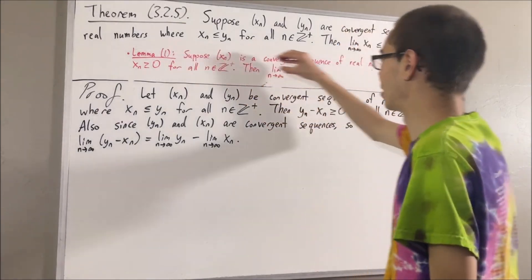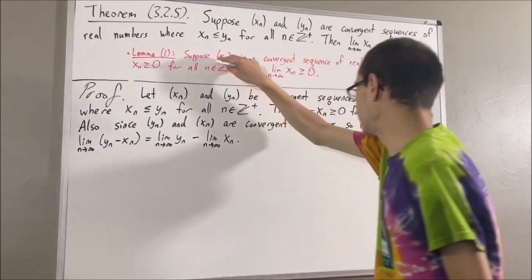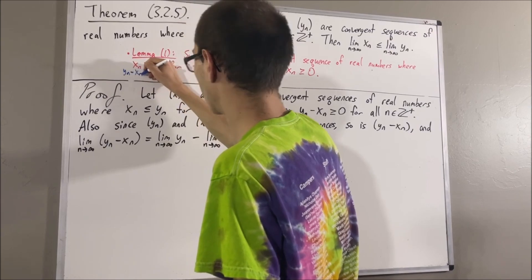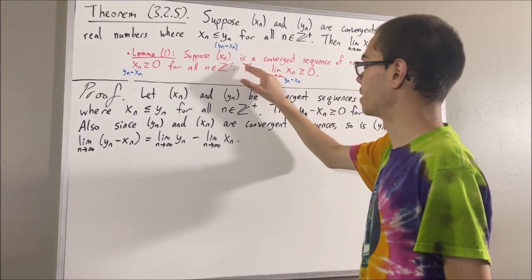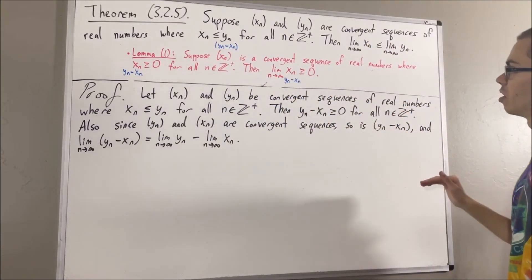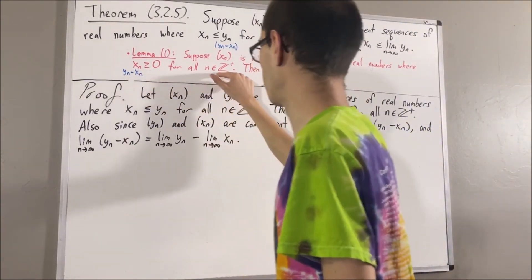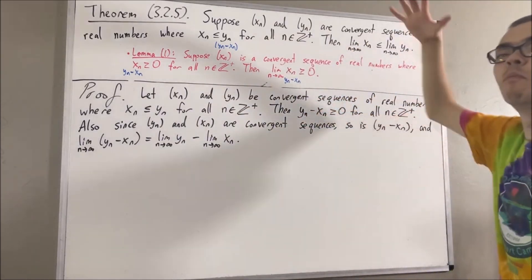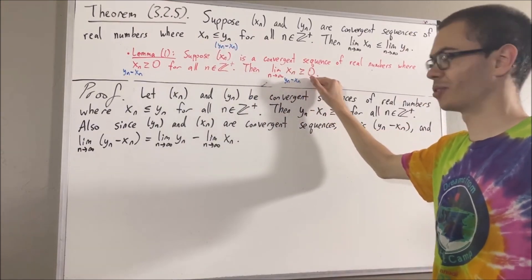Now, let's apply Lemma 1. We'll take xn to be the sequence yn minus xn. So, applying Lemma 1, we know that yn minus xn is a convergent sequence — that's what we said right here. We also know that yn minus xn is greater than or equal to zero for all positive integers n — that's what we said right here. So, by Lemma 1, we have that the limit of yn minus xn is greater than or equal to zero.